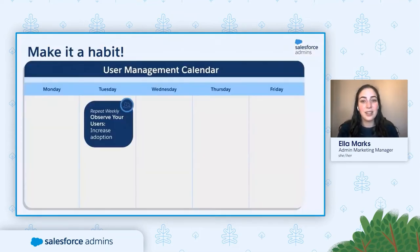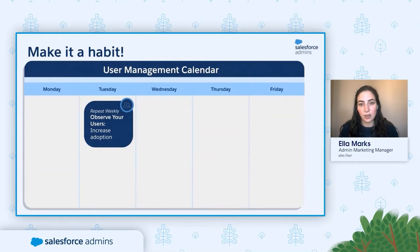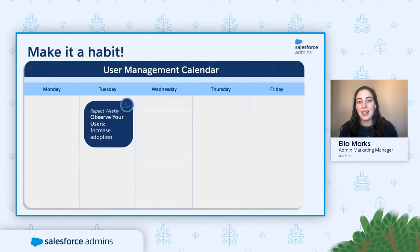To get started observing your users, schedule 30 minutes each week. Doing this will require proactive communication. You don't have to schedule this on the same day and time every week. Remember, not every session will yield brand new enhancements or optimization. These sessions still remain valuable, as you're interacting with stakeholders and strengthening your relationships with them.